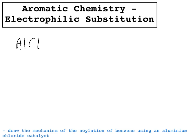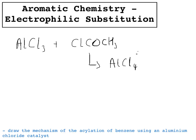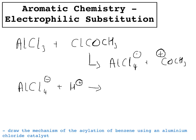We start with AlCl3 reacting with ClCOCH3, and what we make is AlCl4− and COCH3+ with the positive charge on the carbon. Once this reacts with the benzene ring, an H+ is created, and then the H+ ion reacts with the AlCl4− ion to form AlCl3 again plus HCl. So the AlCl3 is a catalyst because it is reformed at the end. This H+ is made during the reaction of the acyl ion with the benzene ring.